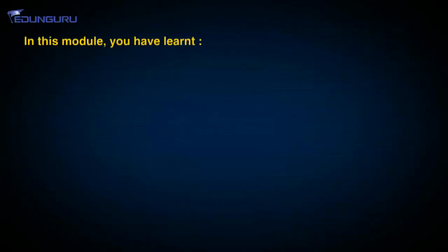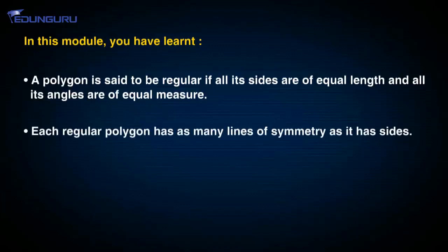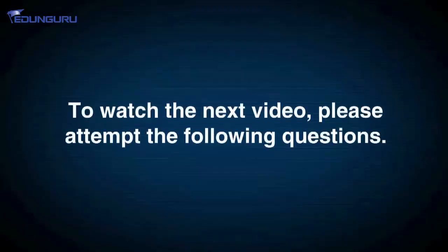Okay students, revise whatever you have learnt today. I will meet you in the next class. So students, before moving on to the next module, let's recap what we have learnt in this module. A polygon is said to be regular if all its sides are of equal length and all its angles are of equal measure. Each regular polygon has as many lines of symmetry as it has sides. To watch the next video, answer the following questions.